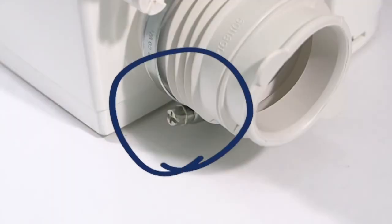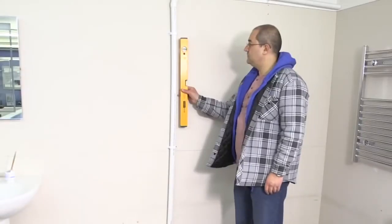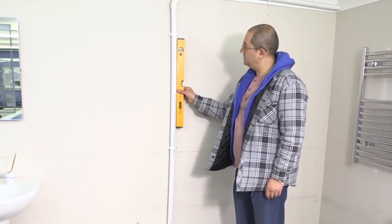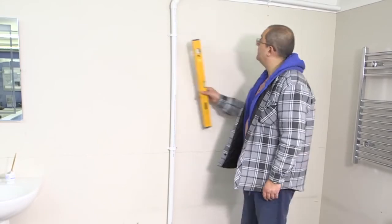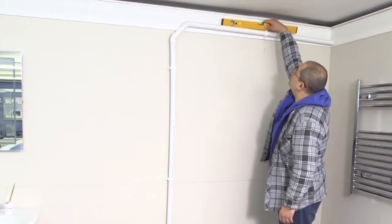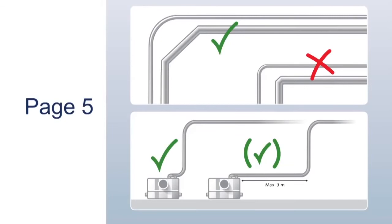Install the outlet pipe securely, ensuring that you use the correct bends and necessary fall, and connect to the soil stack. Please make sure you refer to your manual for recommendation for bends, distances and fall of the discharge pipe.